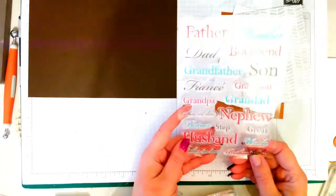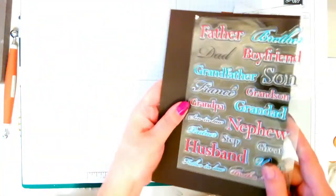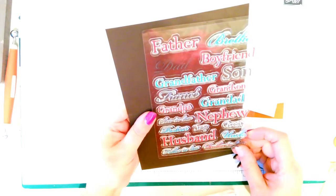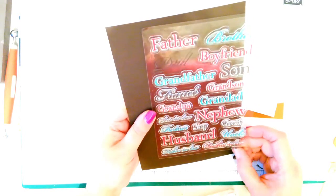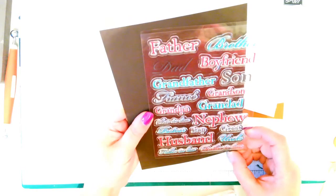First of all, I'm using this stamp set which I got ages ago from a show. It's got father, dad, grandfather, fiance, grandpa, son-in-law, partner, stepfather, husband, father-in-law, brother-in-law, uncle, great nephew, granddad, grandson, son, boyfriend, brother.